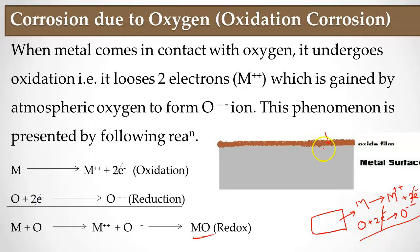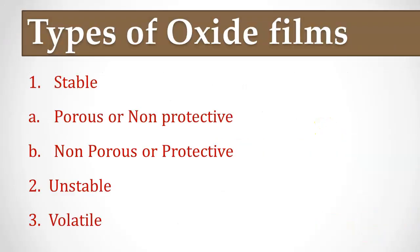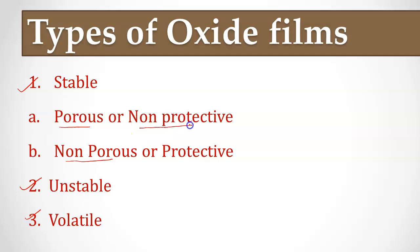The nature of the oxide film formed on the metal surface decides whether corrosion continues or stops. There are three main types of oxide film: stable oxide film, unstable oxide film, and volatile oxide film. The stable oxide film is further of two types — porous and non-porous. The porous film is also called non-protective.